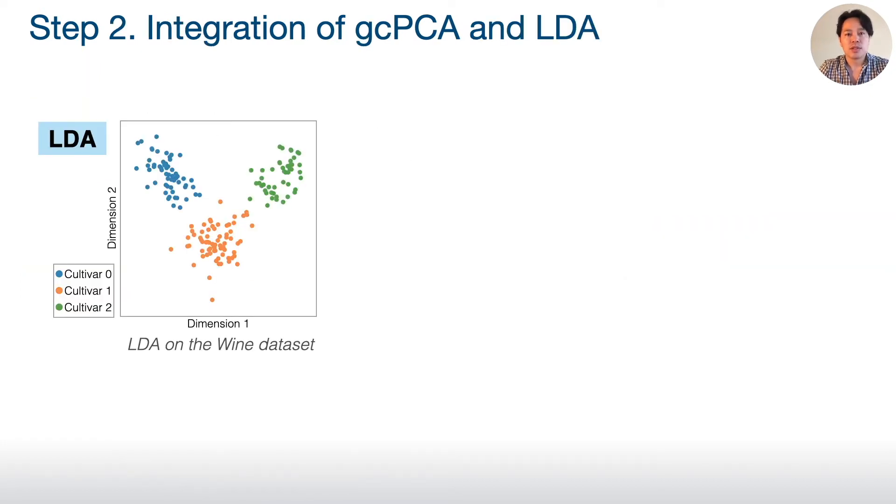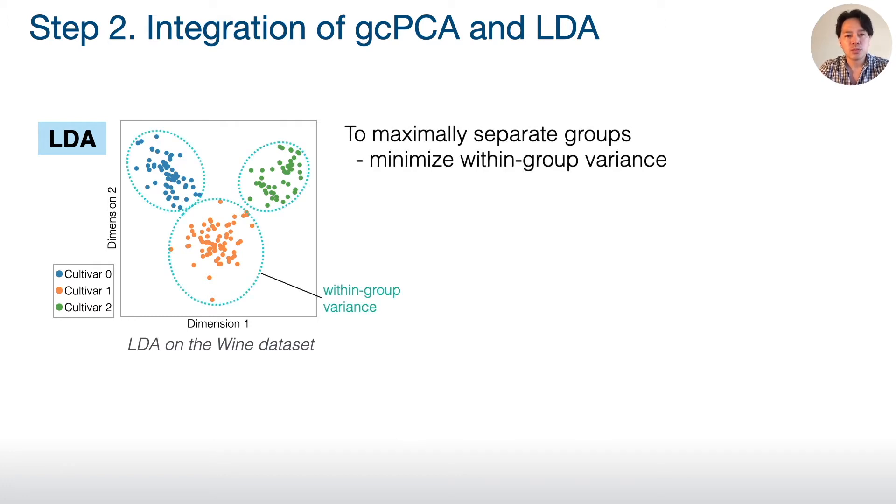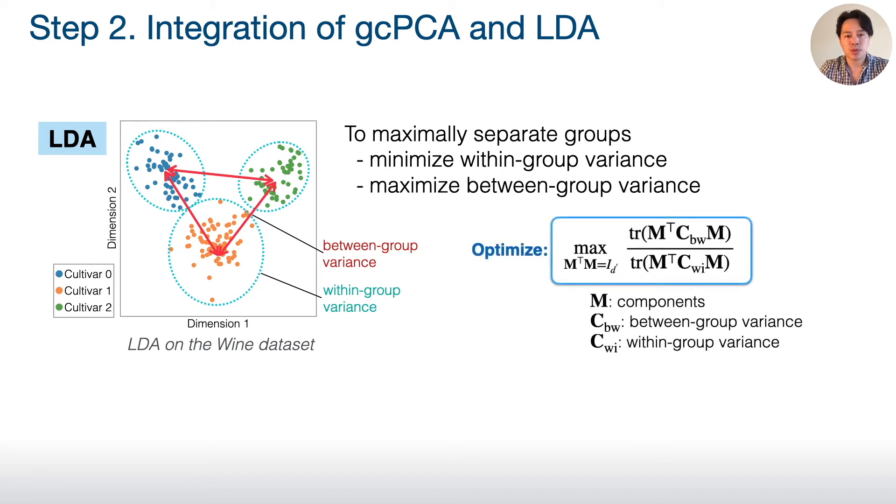The next step is integration of generalized CPCA and LDA. To maximally separate groups, LDA minimizes within-group variance. At the same time, maximizes between-group variance. This optimization can be written as this form.